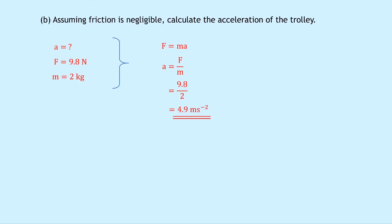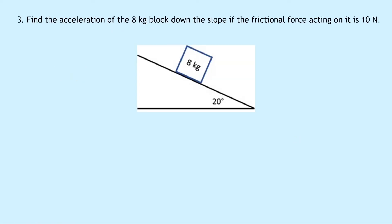Using Newton's second law, F = ma, rearranging gives a = F/m. Substituting: 9.8 ÷ 2 = 4.9 m/s². Note that sometimes a question will also give you a frictional force — in that case you would subtract the frictional force from the parallel component of weight. But here friction is negligible, which made it simpler.